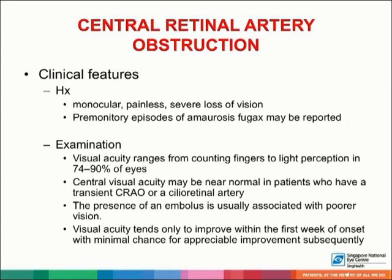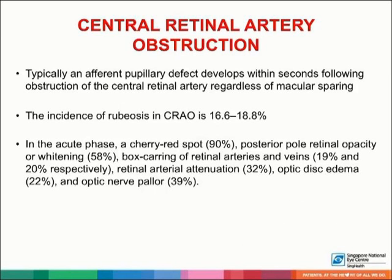In terms of examination, visual acuity ranges from counting fingers to light perception in 74% to 90% of eyes. Central visual acuity may be near normal in patients who have a transient CRAO or a cilioretinal retinal artery. The presence of an embolus is usually associated with poorer vision. Visual acuity tends only to improve within the first week of onset, with minimal chance for appreciable improvements subsequently. An afferent pupillary defect develops within seconds following obstruction of the central retinal artery, regardless of macular sparing.